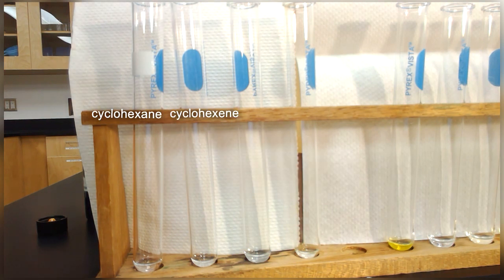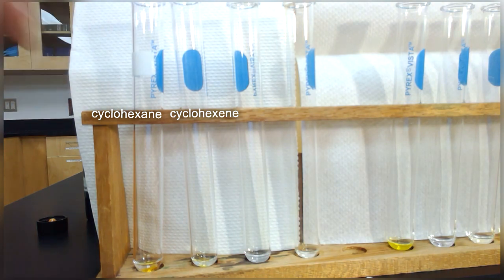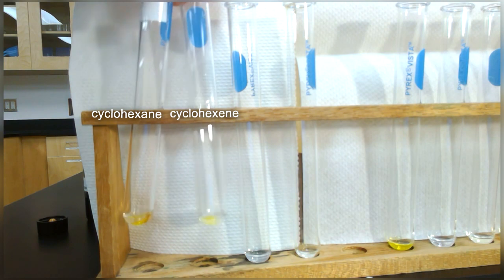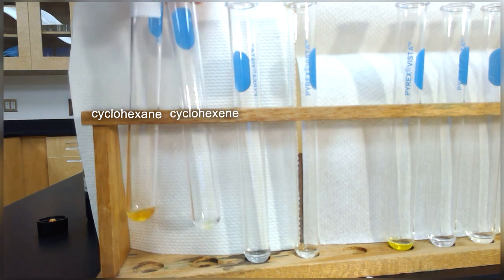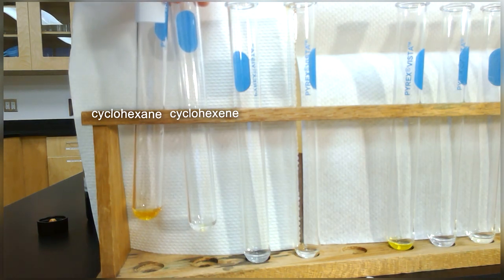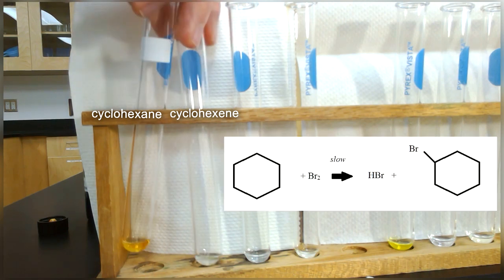So I'll add a few drops of bromine into each of these, and we can see that the color of the cyclohexane has persisted in being orange.